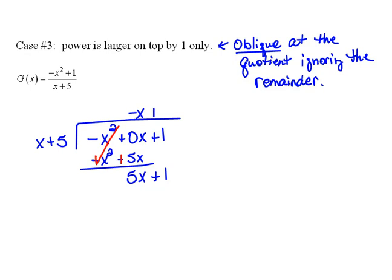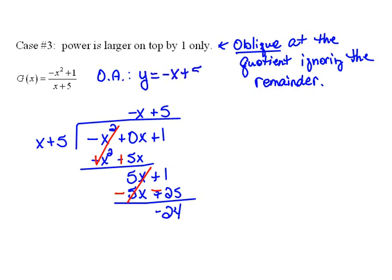x times a positive 5 would be 5x, and 5 times 5 is a positive 25. Now again, we change our signs and combine, so this would give us a remainder of negative 24. We ignore the remainder when we talk about the oblique asymptotes. So we can just simply say we have an oblique asymptote at the line y equals negative x plus 5.